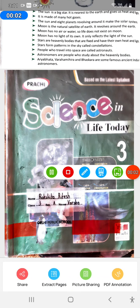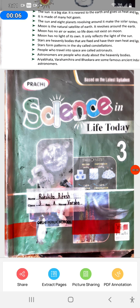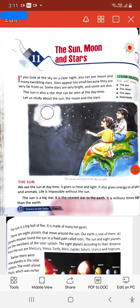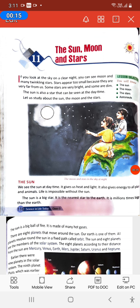Hello friends, today I will read a chapter from the science book. Please read with me and sorry for any mistake. So let's get started. If you look at the sky on a clear night, you can see the moon and many twinkling stars. Stars appear too small because they are very far from us. Some stars are very bright and some are dim.